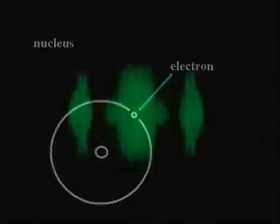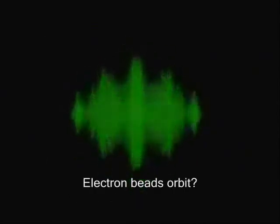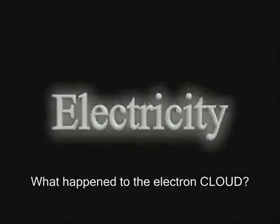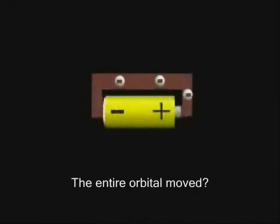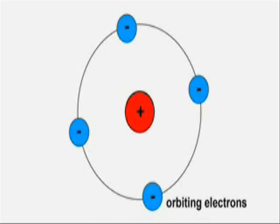An atom has electrons orbiting the nucleus. All electricity is is moving electrons. Electricity is the movement of charged atomic particles called electrons. Flowing electrons are called current. Electrons start to move, traveling from the negative terminal towards the positive terminal. This is electricity. An atom has a positively charged center called the nucleus, and you have negatively charged electrons orbiting around it.